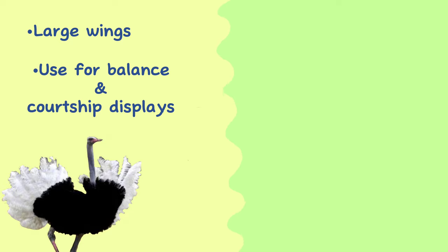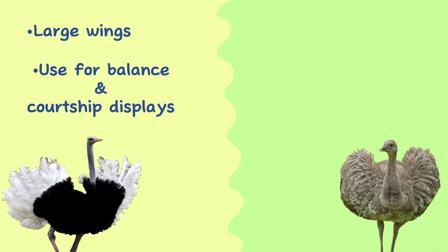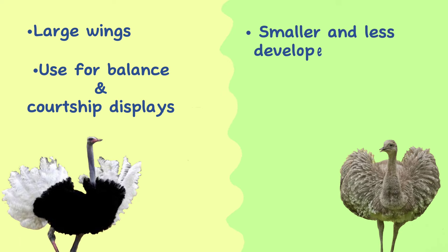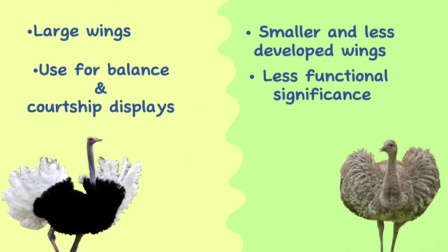Wings. Although both are flightless birds, ostriches have large wings with distinct primary feathers, which they use primarily for balance and courtship displays. Rheas also have wings, but their wings are smaller and less developed compared to ostriches, and are not used for display and have less functional significance.